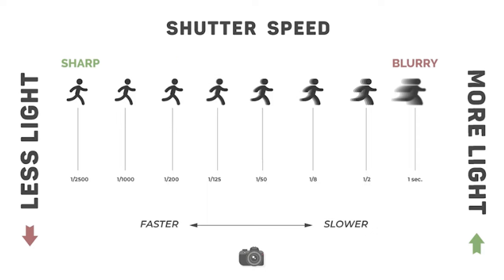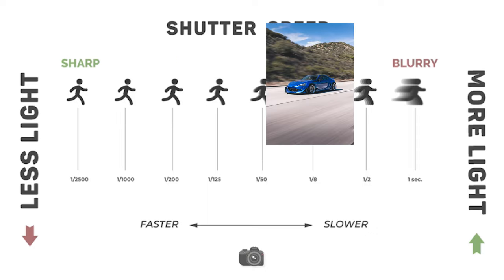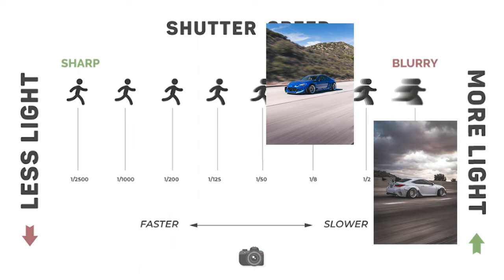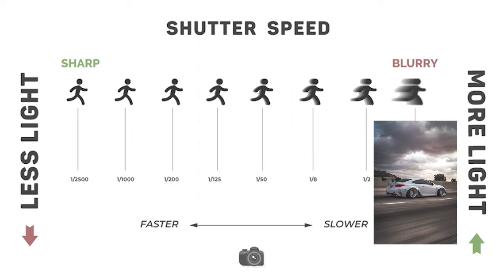While a slower shutter speed allows you to capture images with motion blur, but increases the amount of light you let into your camera sensor. Let's now move on to number two, aperture.